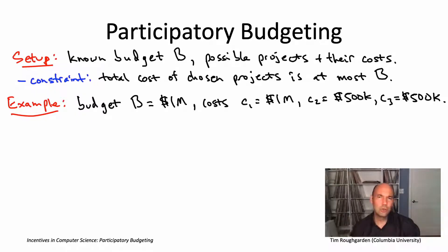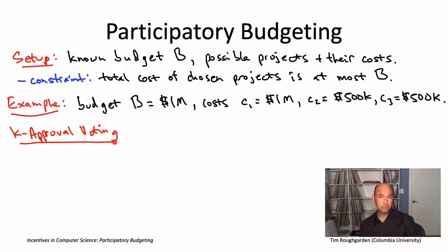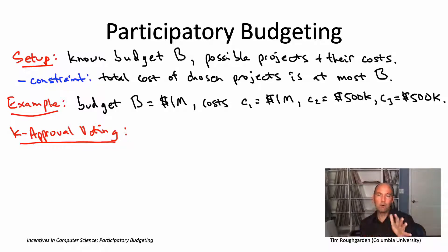The question is: how should you elicit the preferences of voters? What should the ballot look like? When people were first thinking about participatory budgeting, they wanted to keep things simple — voters should be able to understand what they were voting for, and it needed to be implementable on a paper ballot. For those reasons, the most common mechanism is K approval voting. K is a parameter — the number of public projects on which a voter can give a thumbs up. Thumbs up or thumbs down, with K as the constraint on how many thumbs up they can give.